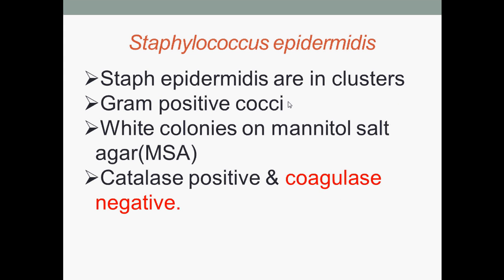The next bacteria is Staphylococcus epidermidis. They are arranged in clusters, are Gram-positive cocci, and form white colonies on mannitol salt agar because they are unable to ferment mannitol. Hence, they do not produce an acidic by-product that changes phenol red to yellow. They are catalase positive, meaning they have the enzyme catalase, and they are coagulase negative.